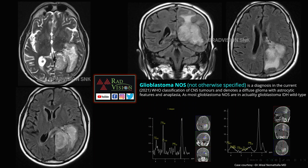Here there is a hyperintense lesion in the periventricular location, infiltrating the atrium and occipital lobe lateral ventricle, hyperintense on FLAIR with adjacent perilesional edema, and elevated choline-creatinine. This is glioblastoma NOS — not otherwise specified — a recent diagnosis in the 2021 WHO classification of CNS tumors, denoting a diffuse glioma with astrocytic features and anaplasia. Most glioblastoma NOS are actually glioblastoma IDH wild-type.